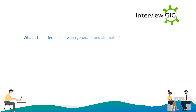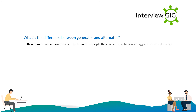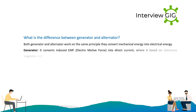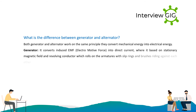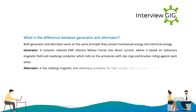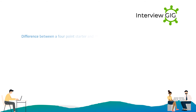What is the difference between a generator and an alternator? Both work on the same principle of converting mechanical energy into electrical energy. A generator converts induced EMF (electromotive force) into direct current, based on a stationary magnetic field and revolving conductor which rolls on the armatures with slip rings and brushes. An alternator has a rotating magnetic field and stationary armature for high voltage, or a stationary magnetic field and rotating armature for low voltage.